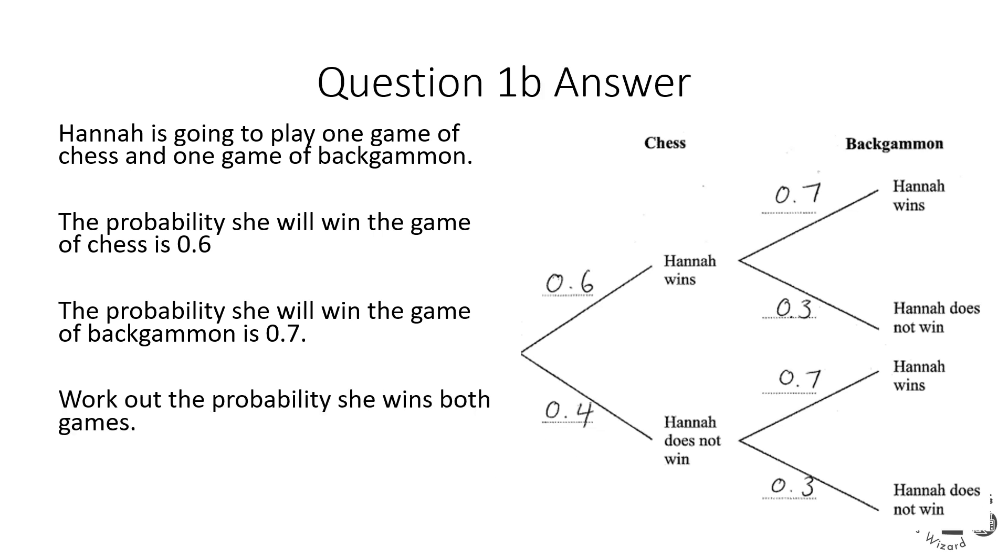Now the second part of this says work out the probability that she wins both games. So we need to follow the branches for this. So if we follow this branch we've got the win for the chess. And we need to keep going on this second set of branches. And then we've got the win for the backgammon. So we've got those two individual probabilities there. But if we multiply them together we will get the probability of winning both of those games which is 0.42. Or 42% if you want it as a percentage.